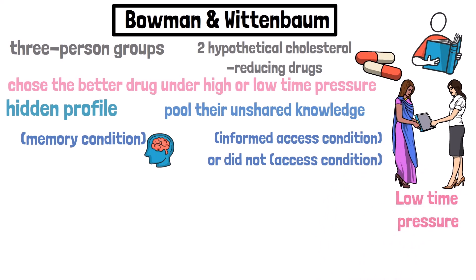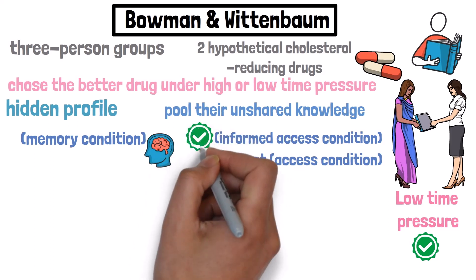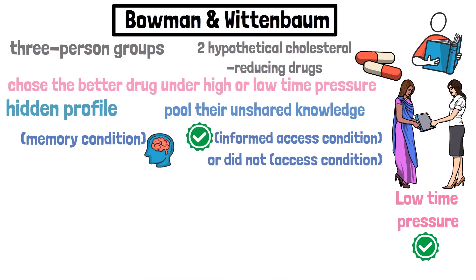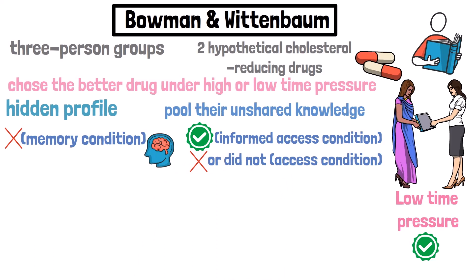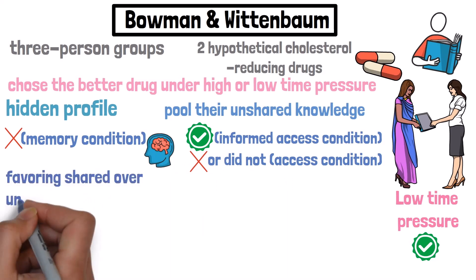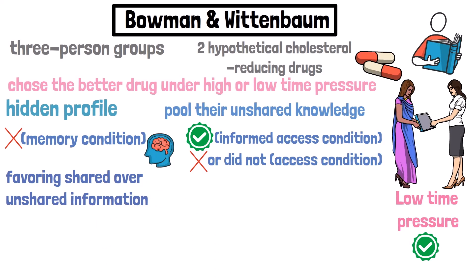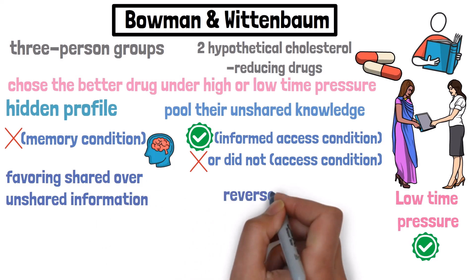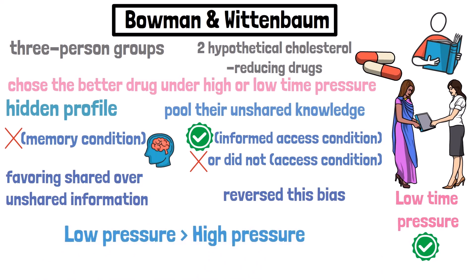Low time pressure groups chose the better drug more often than high time pressure groups, particularly when groups had access to information. Groups in the informed access condition chose the correct drug more often than groups in the memory and access conditions. Memory groups showed the typical discussion bias favoring shared over unshared information, whereas groups with access to information during discussion reversed this bias. This effect was stronger under low than high time pressure.